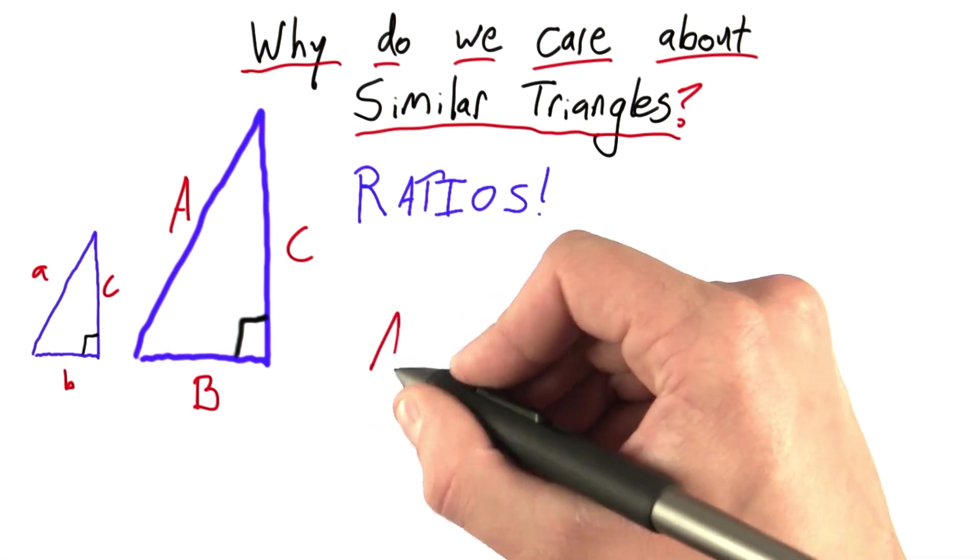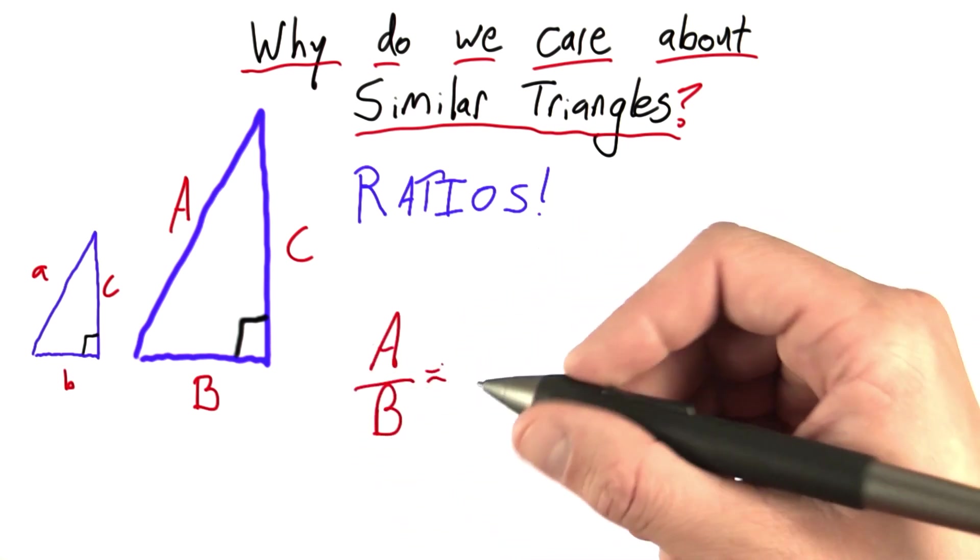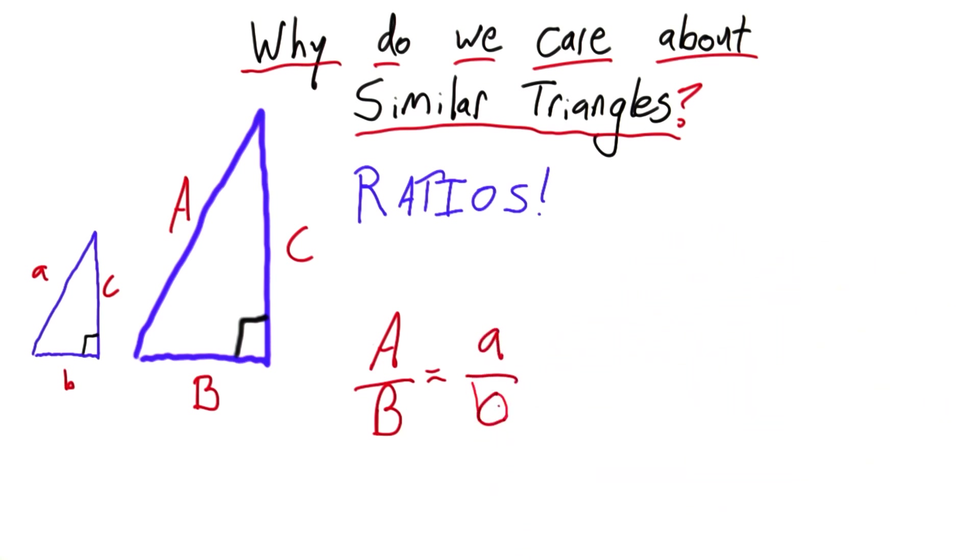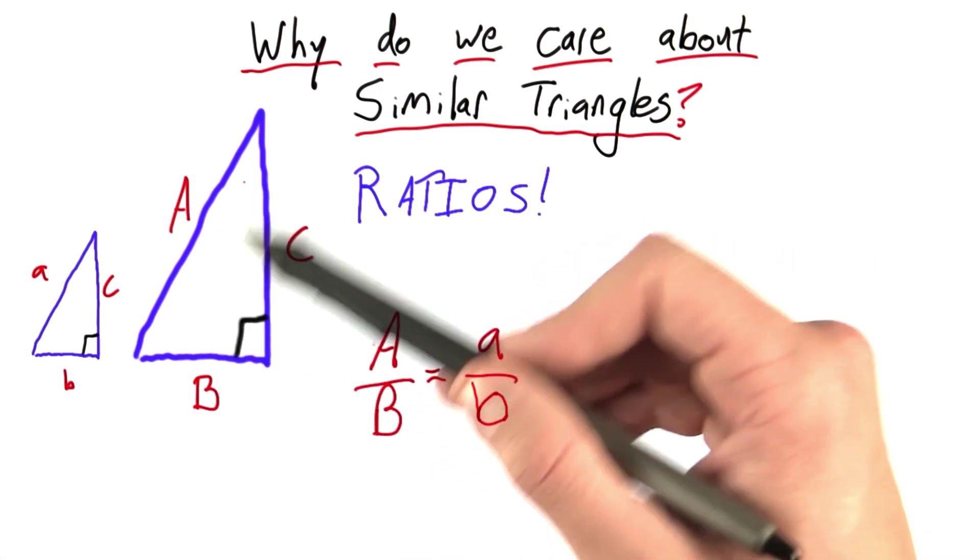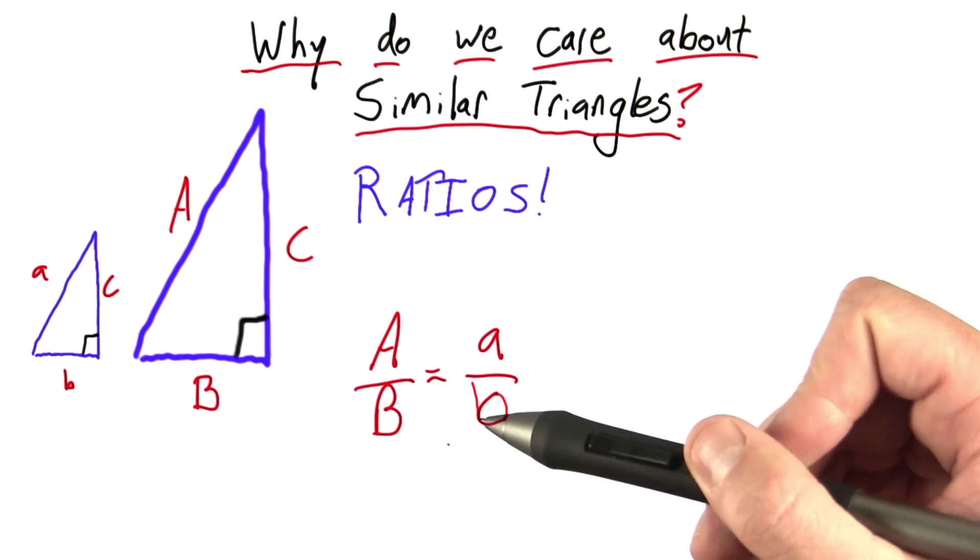And what I mean by that is they're linked through ratios. So if I look at the ratio of side big A to side big B, I'm going to find that's exactly the same as the ratio of side little a to side little c. In fact, it doesn't matter how big or small I make this triangle. This equality will always hold true. And that's a really powerful mathematical tool that we can use.